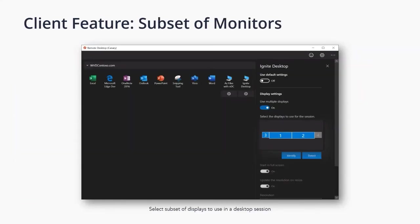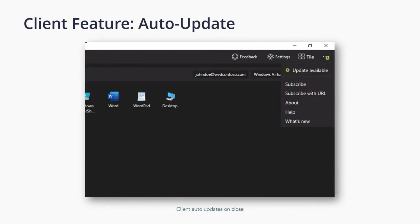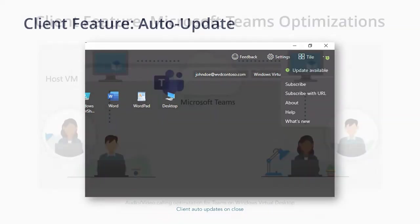Here you see a feature showing subset of monitors — in this view there are four monitors and the user has selected three out of four. This can be set prior to connection or changed dynamically as working needs change. Next, let's look at auto-update. IT admins let us know about the need to stay up-to-date, so the client now auto-updates. Our Windows client will notify the user that there's an update available, and the user can update right away or close the window and it updates. All other platforms auto-update from the store automatically.